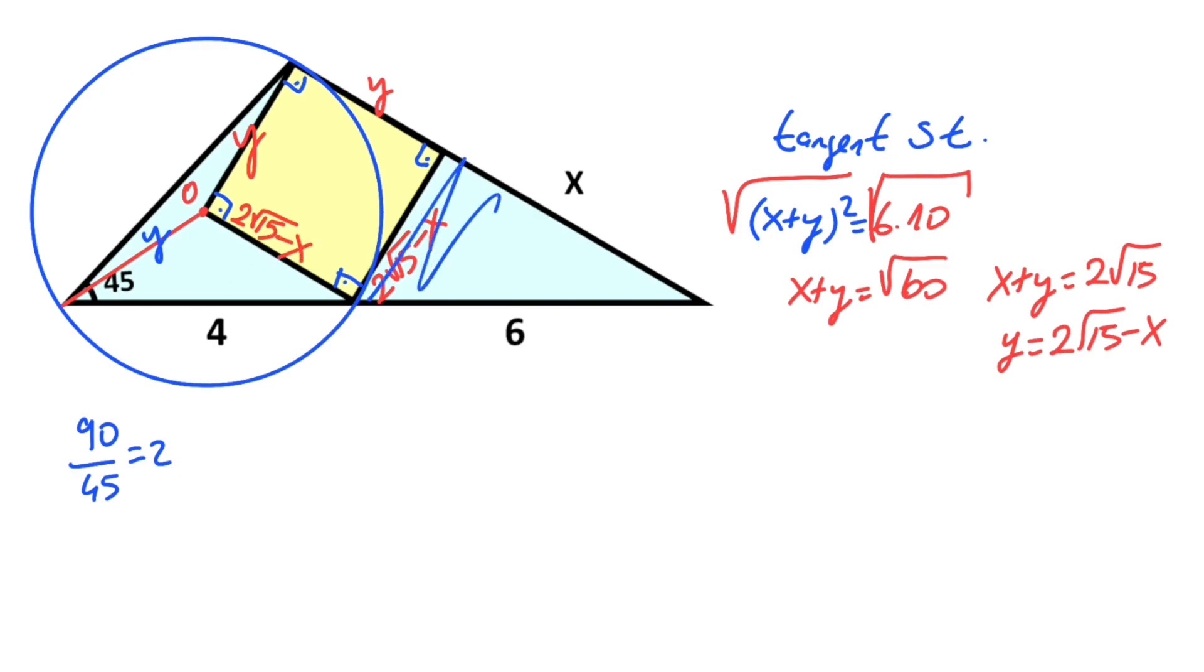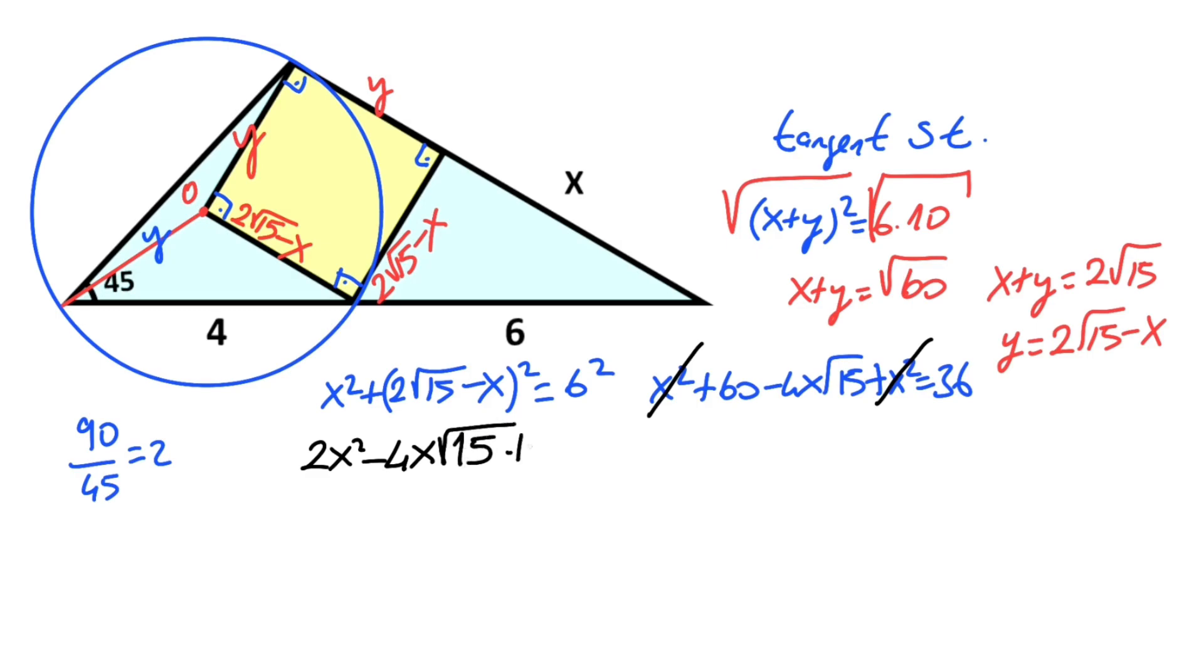And then for this triangle, if we apply Pythagorean theorem, we get the value of x. So x squared plus (4 + 2 root 15 minus x) squared equals 6 squared. Therefore, x squared plus 60 minus 4x root 15 plus x squared equals 36, which simplifies to 2x squared minus 4x root 15 plus 60 minus 36 equals 0.